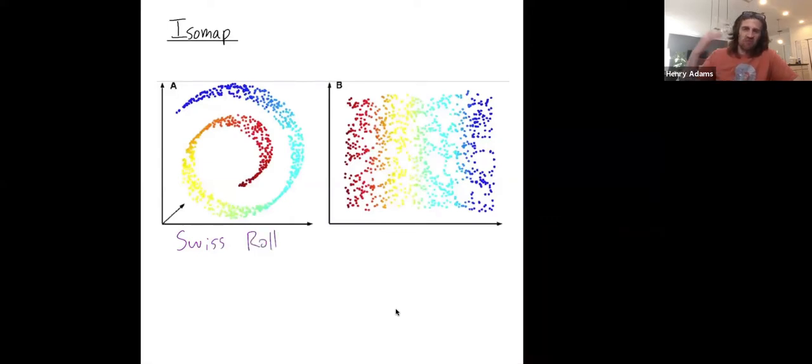And pretty much whenever you write a paper about nonlinear dimensionality reduction, you might include a Swiss roll as one of your canonical examples of a data set that you don't want to reduce the dimension linearly, but instead in a nonlinear way.